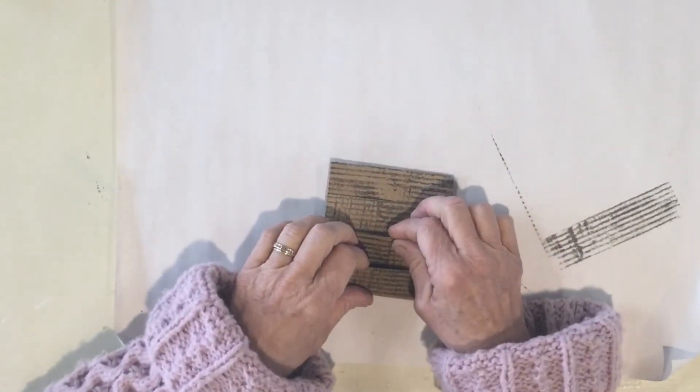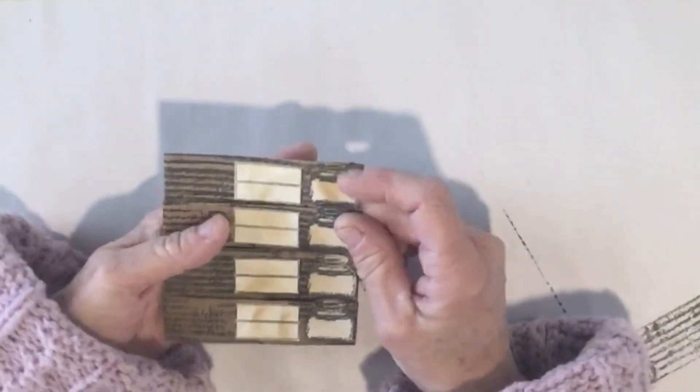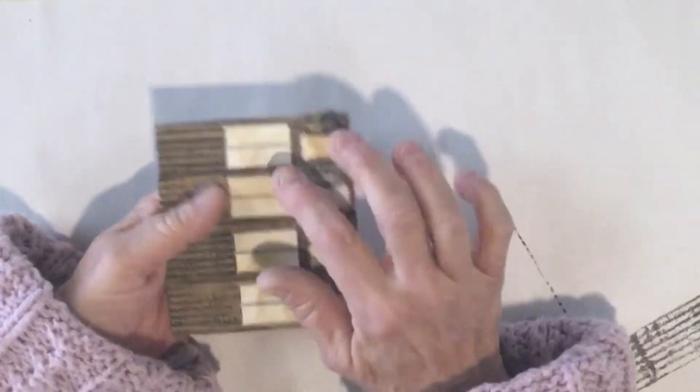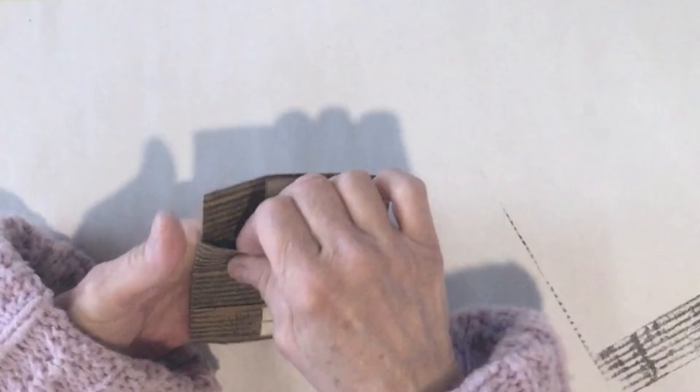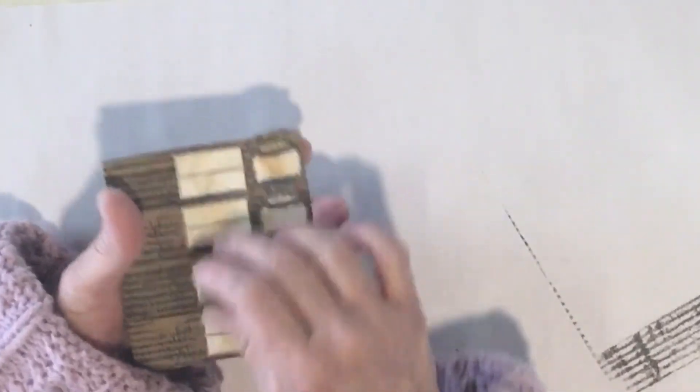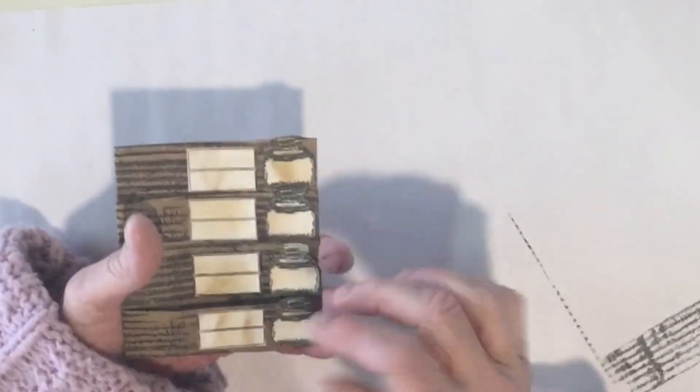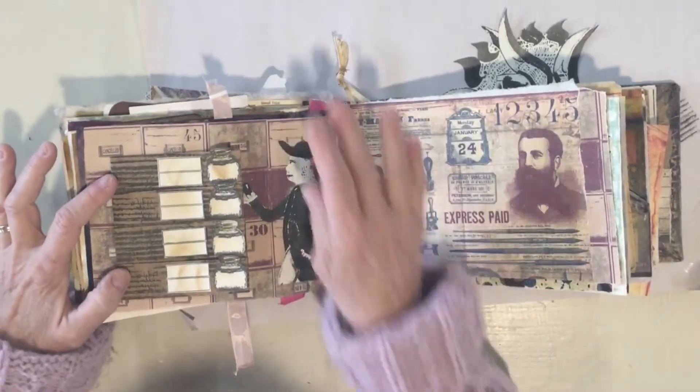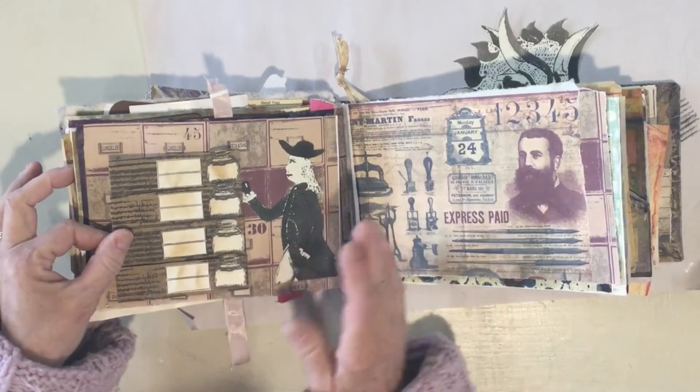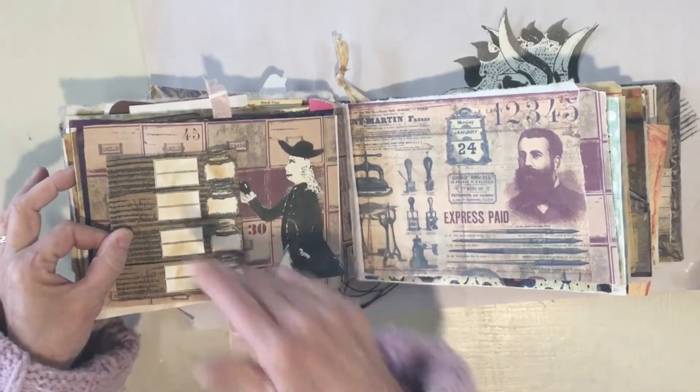Now you can embellish this any way you want and you can add some fun tags and cards to it. You can see I just stamped some little squares and some ink bottles and some fun things, but you can use whatever you would like just to add to your little pockets.